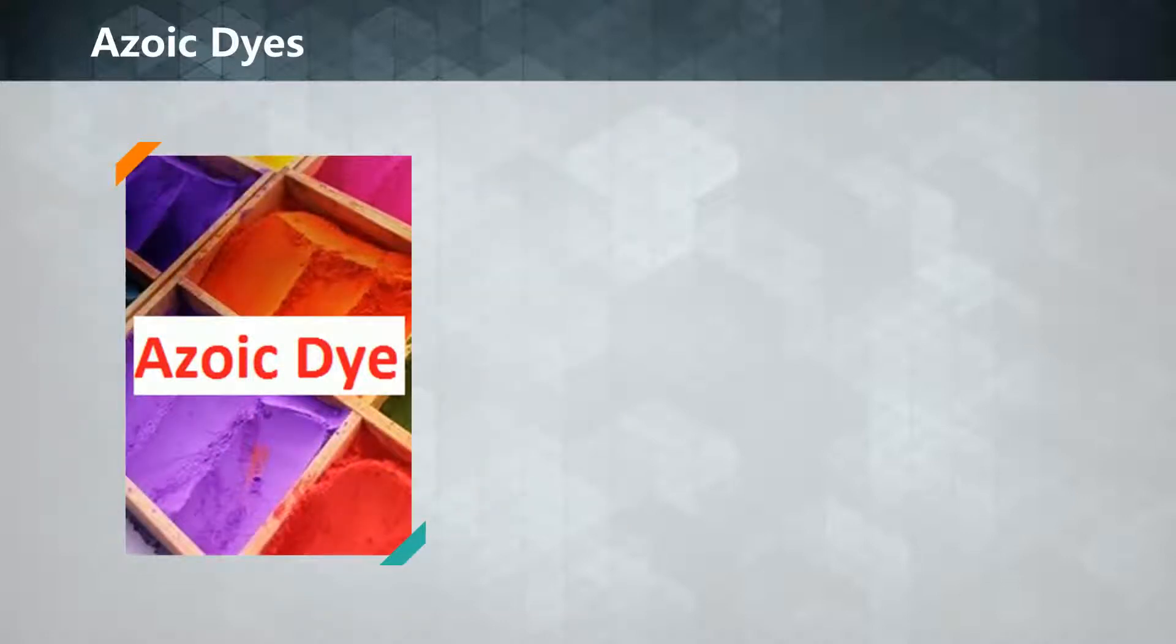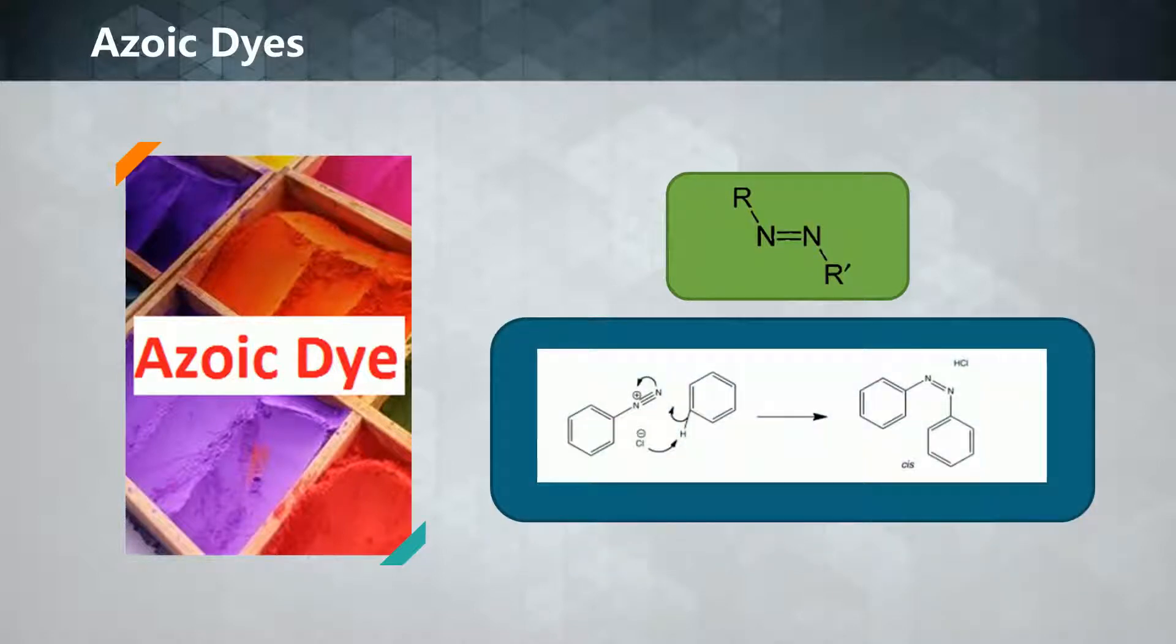Azoic dyeing is a technique that produces insoluble azo dyes directly on or within fibers. This is accomplished by treating the fibers with diazo and coupling components. By adjusting the bath conditions, the two components react to produce the desired insoluble azo dye.